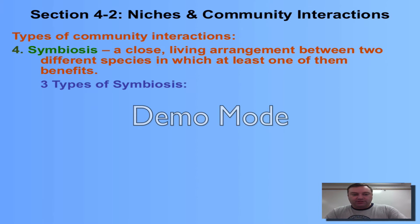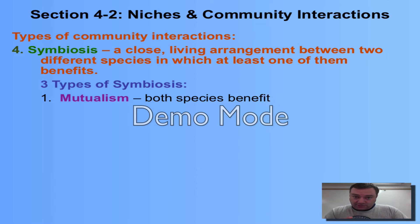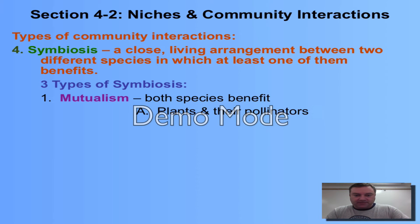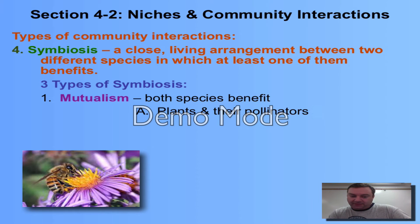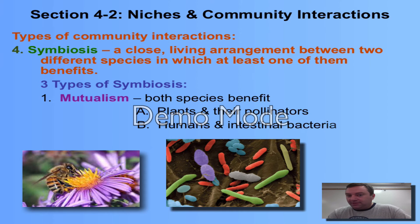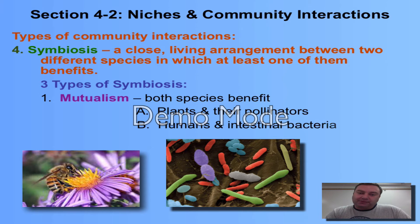The first type is called mutualism. In mutualism, both species benefit. Think about plants and their pollinators — the bees get nectar from the plant, so they're getting food, and the plant is getting a delivery system to get pollen from one flower to another to help the plants reproduce.